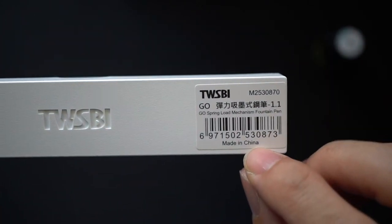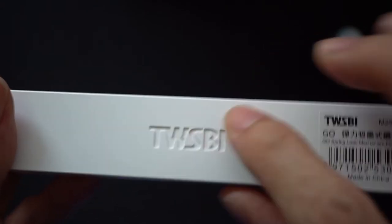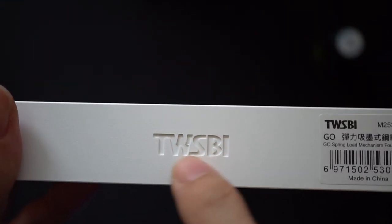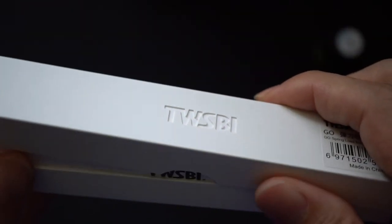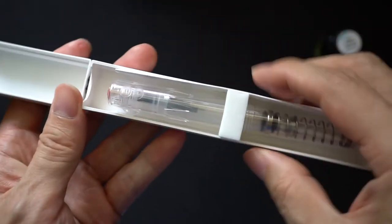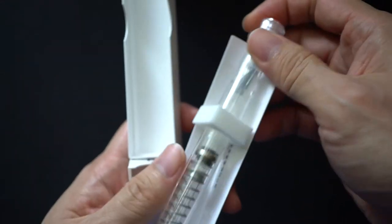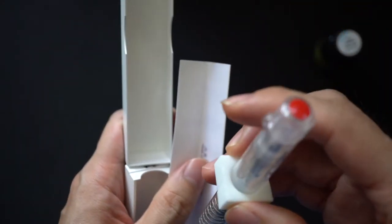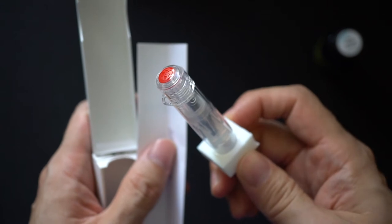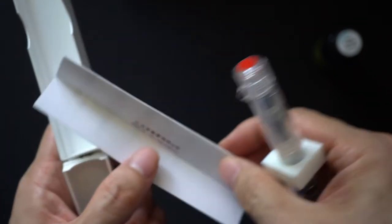It's made in China. The box actually has a kind of embossed Twisbee name down here. And opening up the box, you get the pen. It's protected with a piece of foam down here so it won't rattle around very much.